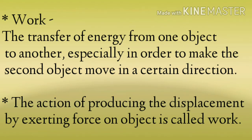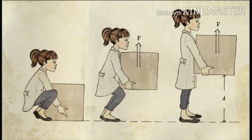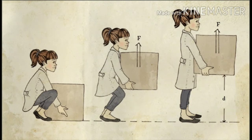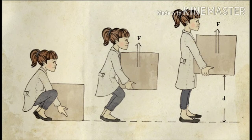The action of producing displacement by exerting force on an object is called work. If an object like a box comes from a certain direction and goes up to a certain direction, displacement occurs — from one place to another. So here, force is applied and displacement occurs. We can say that if we take a box in a certain direction, then force plus displacement means work will be counted.